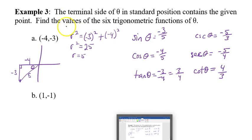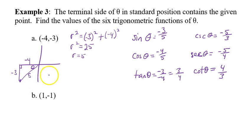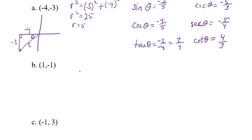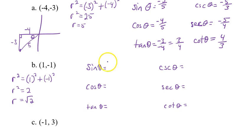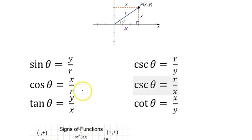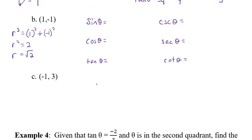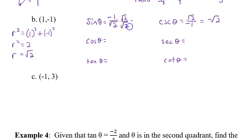Part B: point (1, −1). Using the formula method: r² = 1² + (−1)² = 2, so r = √2. Sine = y/r = −1/√2; cosecant = √2/(−1) = −√2. Rationalizing sine gives −√2/2. Cosine = x/r = 1/√2; secant = √2. Rationalizing cosine gives √2/2.